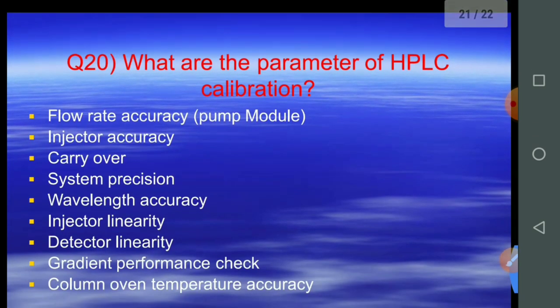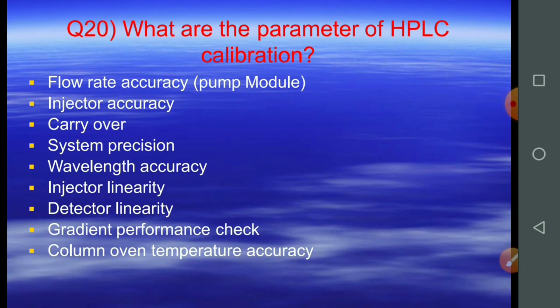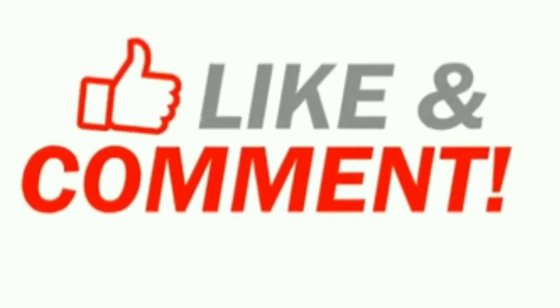Question number twenty: what are the phenomena of HPLC calibration? Number one, flow rate accuracy, also known as pump module; number two, injector accuracy; number three, carry over; number four, system precision; number five, oil blend accuracy; number six, injector linearity; number seven, detector linearity; number eight, gradient performance check, also known as GPV; and the last one is column oven temperature accuracy, also known as APOC.